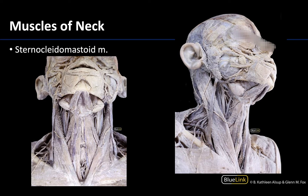As you can see on this particular straight anterior image, the sternocleidomastoid is going to form this fairly large region on the lateral sides of the neck. It is more superficial than the supra and infrahyoid muscles, forming these very rope-like dominant muscles. Its superior attachments are way up here towards the ear — the mastoid process and a little bit on the occipital bone.